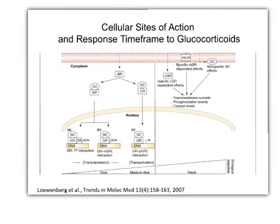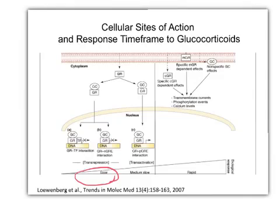Turning to the cellular action of glucocorticoids, this relatively complex slide taken from a review article — the main thing I want to point out is that we have several locations in which glucocorticoids seem to act. I'm going to start with the most classical and most slow type of action at the cellular level, and that is where glucocorticoids move into the cell, interact with the glucocorticoid receptor, which then translocates to the nucleus and interacts with the hormone response element on DNA. That leads to alteration, either up or down, of messenger RNA production for certain proteins and leads to protein amounts going up or down. So that's more of the classical action of glucocorticoids.